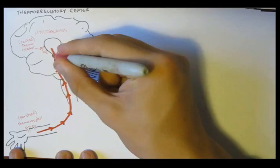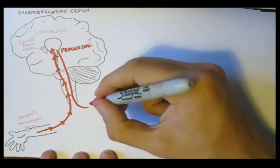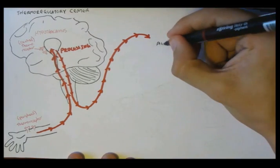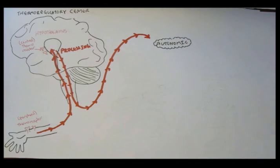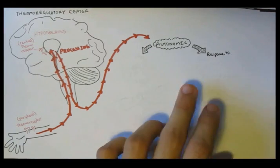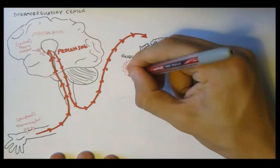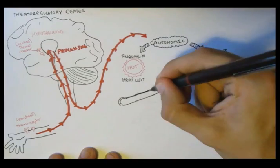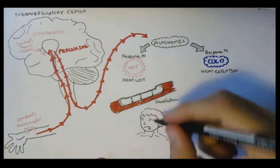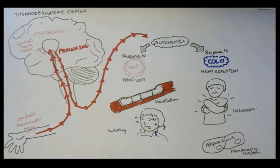Let's look at an example of thermoregulation. If the peripheral thermoreceptors sense changes in temperature, they will send these signals to the thermoregulatory center. This information will then get processed, and an appropriate autonomic response will be sent to the body to try to keep the internal temperature stable. Depending on the initial stimulation, the thermoregulatory center's response can be either responding to cold weather, which means it will try to retain heat, or responding to hot weather, which means it needs to lose heat. The mechanism to lose heat in response to a rise in temperature is by dilating blood vessels, known as vasodilation, and another response is by sweating. If the body is responding to cold, the body will shiver or use non-shivering mechanisms, such as stored fat.